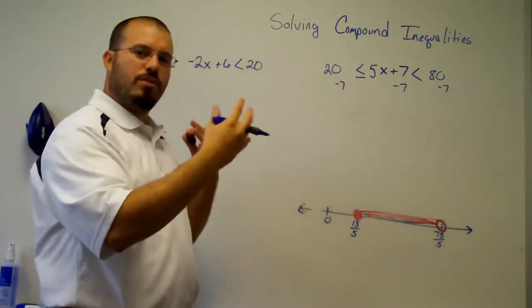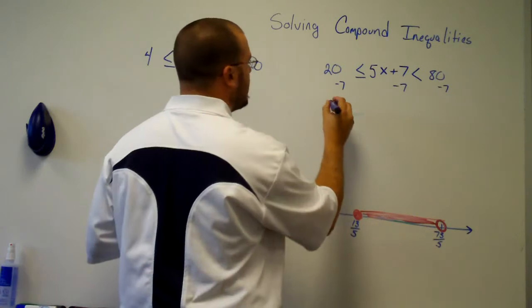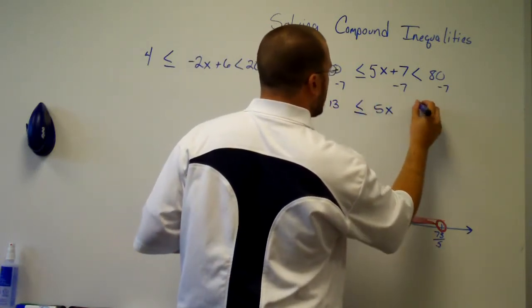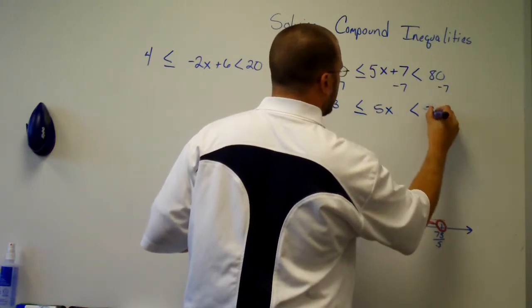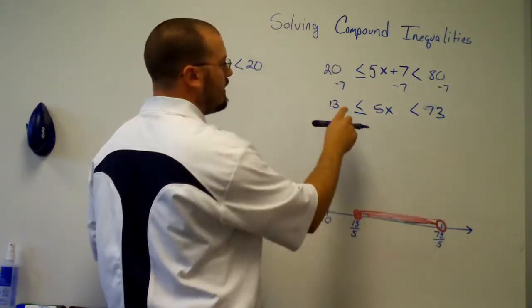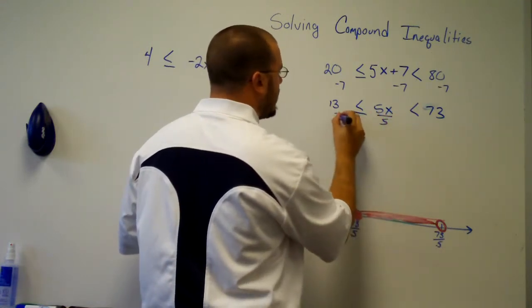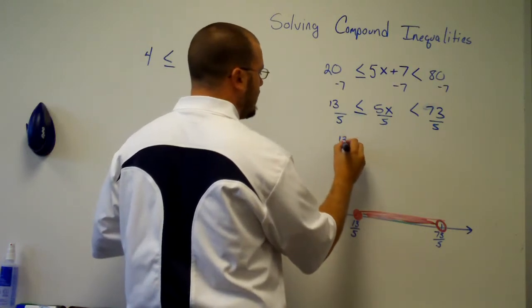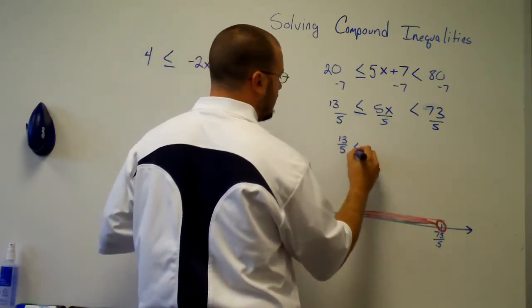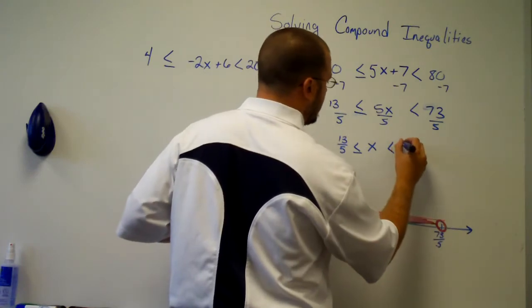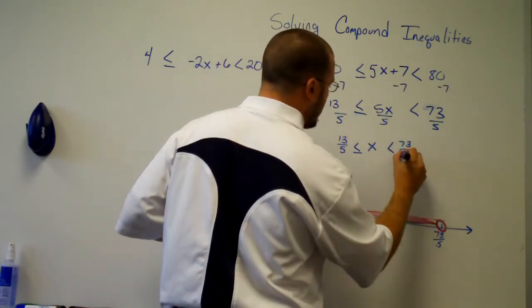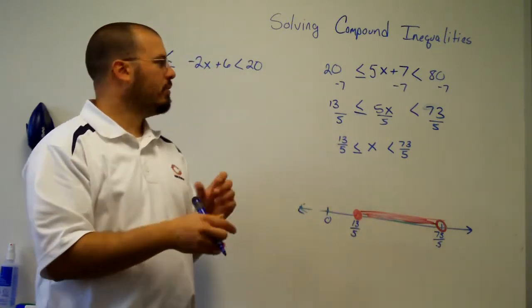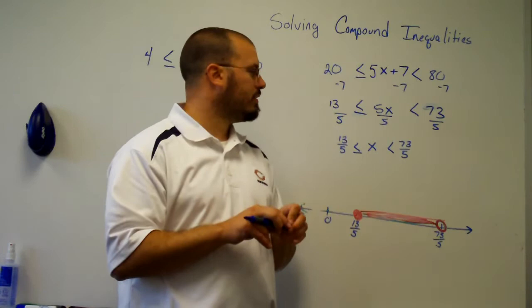Working with all three parts of the inequality at once: subtract 7 from everything, then divide everything by 5. Whatever we do to one part of the inequality, we have to do to all of them. We get 13 fifths ≤ x < 73 fifths — the same solution we had when we split it, which should be the case if there are two valid methods.